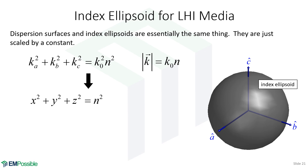Back to index ellipsoids: if we stare at the dispersion relation long enough it looks like the equation for a sphere, so let's write it that way and let the radius be the refractive index. Now this really is a map of refractive index as a function of direction. In my mind, dispersion surfaces and index ellipsoids map out the same surface, scaled simply by a k₀ term, so you'll hear me use them interchangeably. Technically, an index ellipsoid maps refractive index as a function of wave direction. For an LHI material that index ellipsoid is a perfect sphere — constant in all directions.